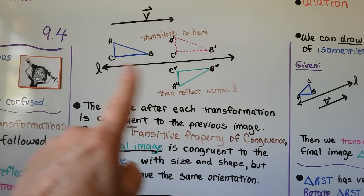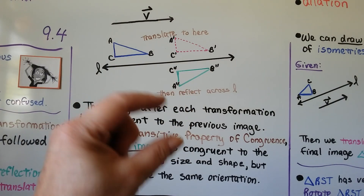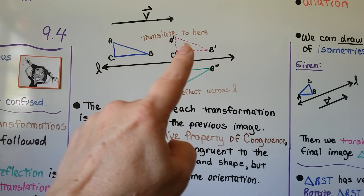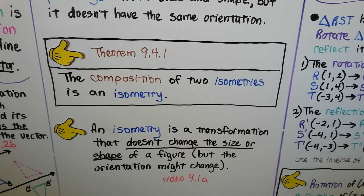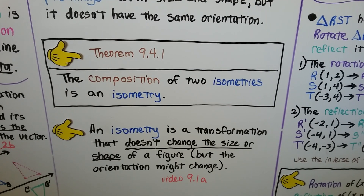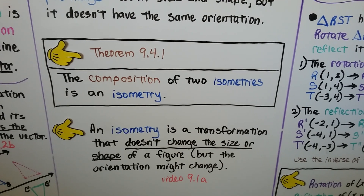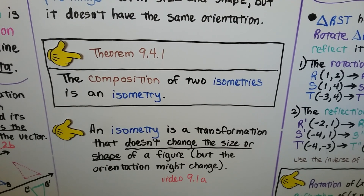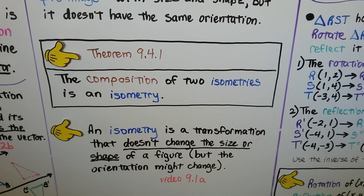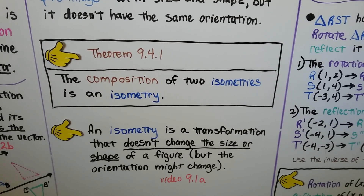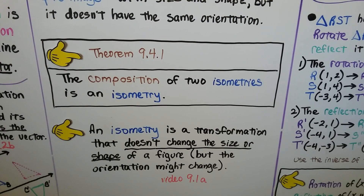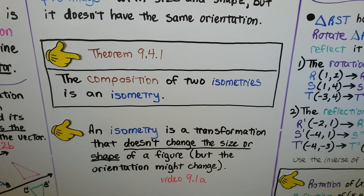By the transitive property of congruence, the final image is congruent to the pre-image with the same size and shape, but it doesn't have the same orientation. And that brings us to Theorem 9.4.1: the composition of two isometries is an isometry. An isometry is a transformation that doesn't change the size or shape of a figure, but the orientation might change.